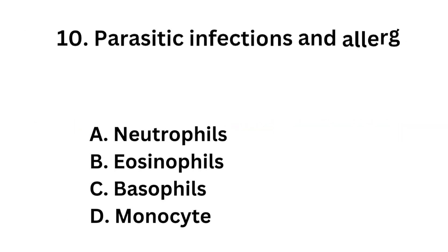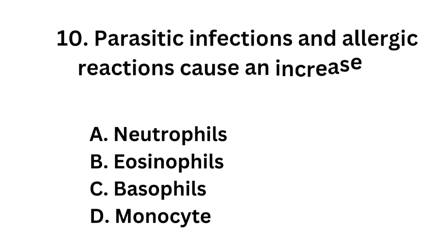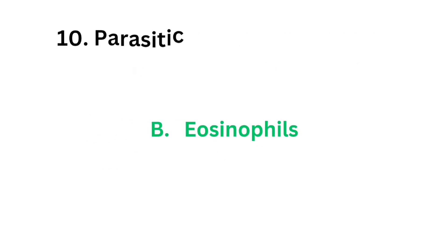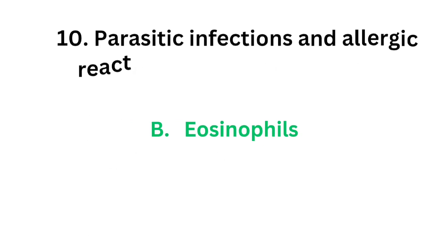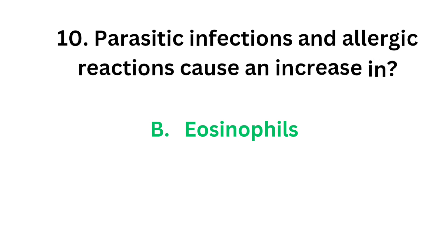Question number 10. Parasitic infections and allergic reactions cause an increase in: Option A: Neutrophils. Option B: Eosinophils. Option C: Basophils. Option D: Monocyte. The correct answer is Option B, Eosinophils. Eosinophils will be increased in parasitic infections and allergic reactions.